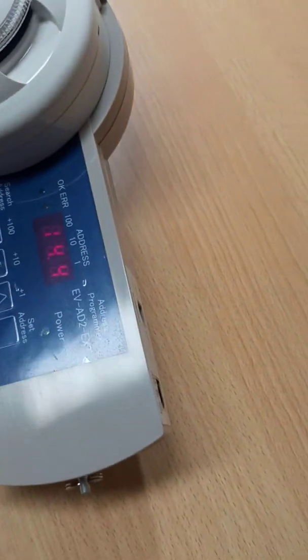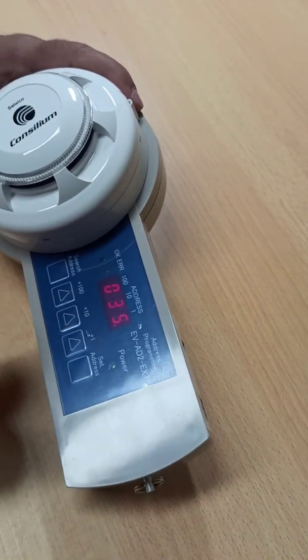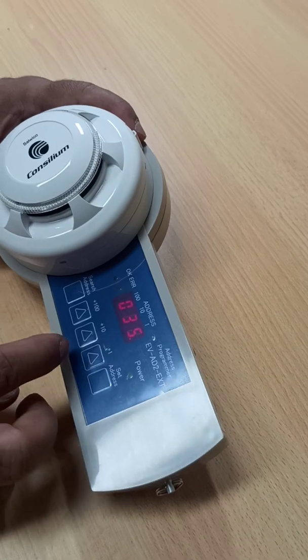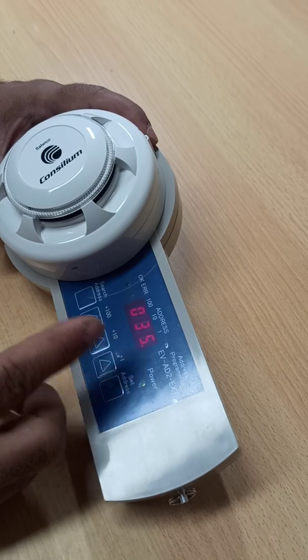This smoke detector already has an address which is 35. Now we want to change the address. Let's make it 45 or 43, whatever as per your requirement.